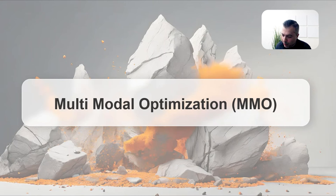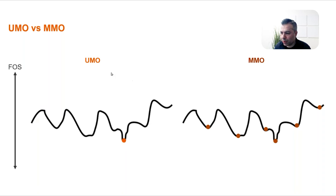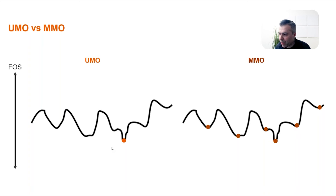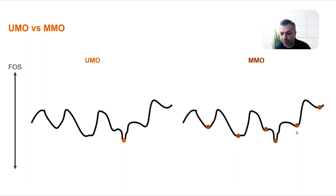We didn't stop there. In traditional limit equilibrium we always look for the global minimum, but it's hard because there are local minimums with factor of safety values very close to the global minimum but at totally different locations. That's why we came up with an algorithm called multimodal optimization (MMO). In this algorithm, instead of looking only for the global minimum, we look for all local minimums — the global minimum is one of them. The chance of getting trapped in local minima is very low because we find all of them. Instead of showing one single slip surface, we can show three, four, or as many as you want.